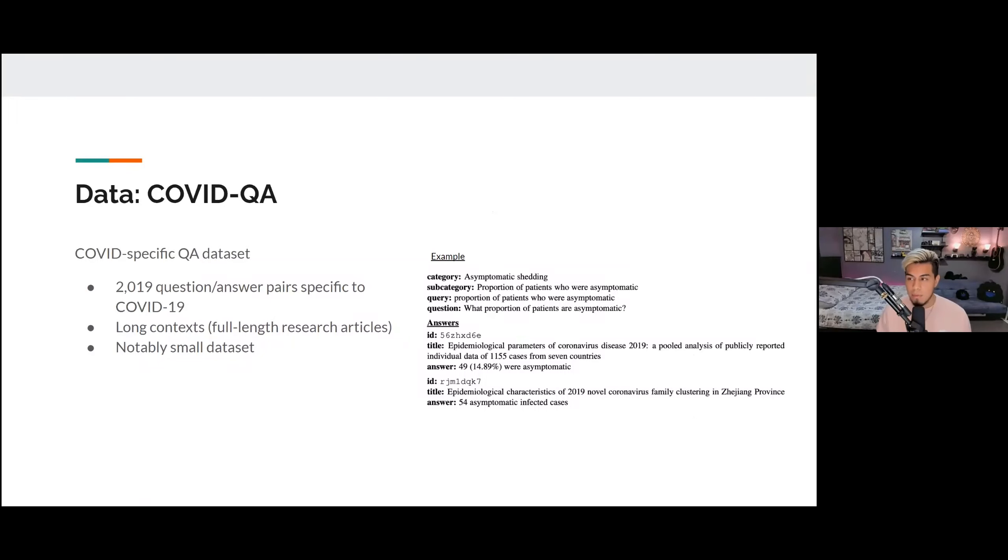And with COVIDQA, it is a COVID-19 specific data set created last year. There are 2019 question answering pairs specific to it. And similar to Bioask, it has very, very long context because it is much more detailed. So whereas SQUAD has each context only about a paragraph long, COVIDQA is multiple paragraphs a page long. It's very, very long. And that introduced its own unique challenges to what we did.